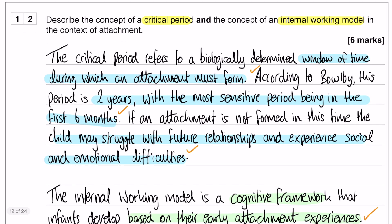Moving on to question 12 — for six marks covering two concepts, think of it as two lots of three, so three pieces of information for each. For the critical period: first, what the critical period is; second, how long that critical period is according to Bowlby — the first two years, with the most sensitive period being the first six months; and third, an extra piece of information such as: if an attachment is not formed in that time, a child may struggle with future relationships and experience social and emotional difficulties. Three pieces of information will do the trick.